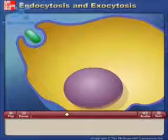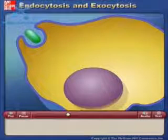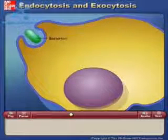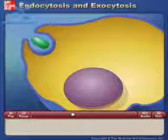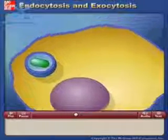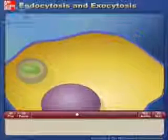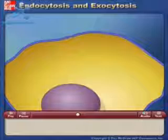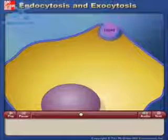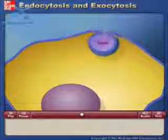If the material the cell takes in is particulate, such as a bacterium or a fragment of organic matter, the process is called phagocytosis. If the material the cell takes in is liquid, it is called pinocytosis.